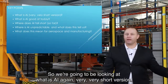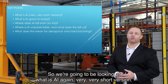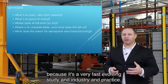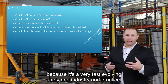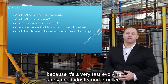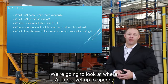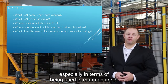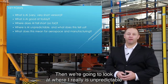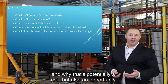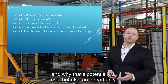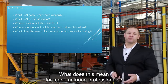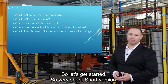We're going to be looking at what AI is — a very short version. We're going to look at what AI is good at today, because it's a very fast-evolving study and practice. We're going to look at where AI is not yet up to speed, especially in terms of being applied to manufacturing. Then we're going to look at where AI is really unpredictable and why that's potentially a risk but also an opportunity. Finally, we're going to end with what does this mean for you — what does this mean for manufacturing professionals? So let's get started.